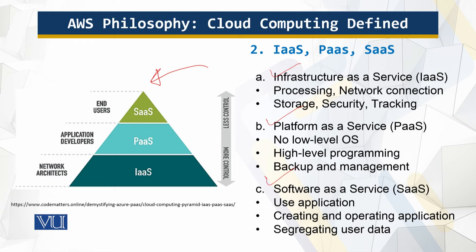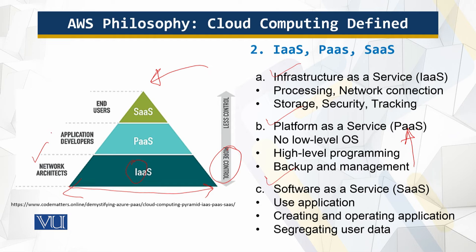For infrastructure as a service, the users are network architects. They are quite a few in number and they have a lot of control. For platform as a service, there are no low-level operating system commands — you run high-level programming. Backup and management are done by the platform. Application developers are the users, and they are fewer, with moderate control.